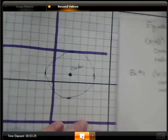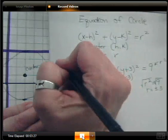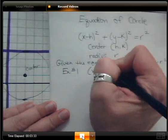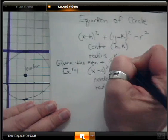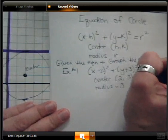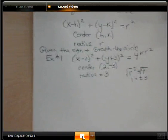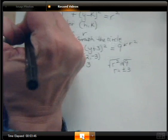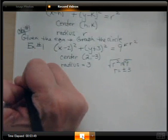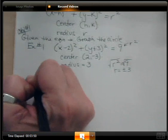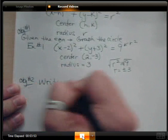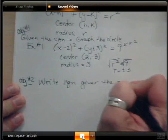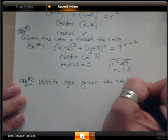That's our first objective: given the equation, be able to graph the circle. Objective number 2 is to be able to write the equation given the center and radius.